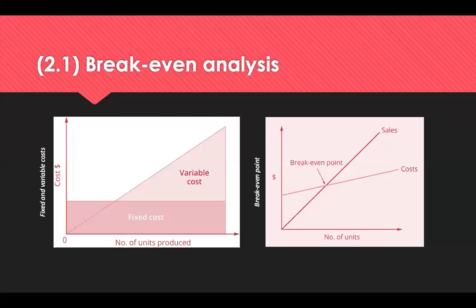Breakeven analysis is concerned with predicting costs, volumes and profit at different levels of activity. It can be conducted by constructing a chart or applying a formula — the chart shows approximate profit or loss for different activity levels, while the formula calculates the exact breakeven point. Because breakeven analysis uses assumptions about cost behaviour, there are limitations in its application; most importantly, fixed and variable costs do change, and those changes affect the behaviour. So the identification of the breakeven point is not the sole purpose — looking at various levels of activity gives greater importance for the management of this information.